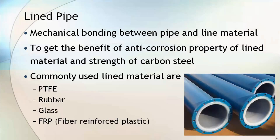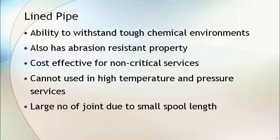Lined pipe has a mechanical bonding between the pipe and the lining material. By applying lining material to the carbon steel pipe, we can get the benefit of the anti-corrosion property of the lining material and the strength of the carbon steel. Commonly used lining materials are PTFE, rubber, glass, and FRP.